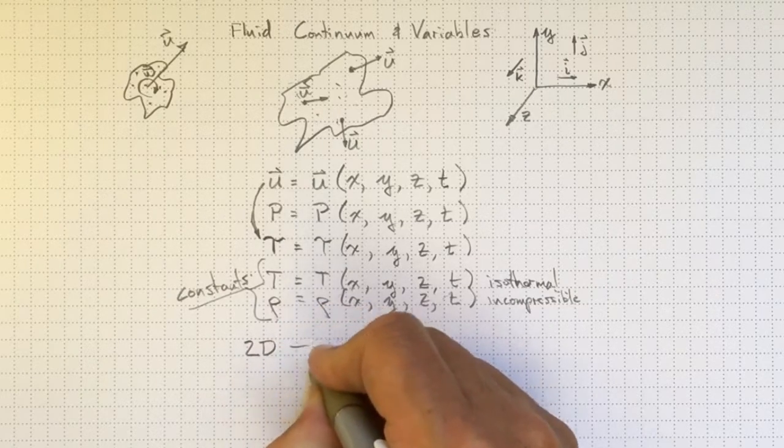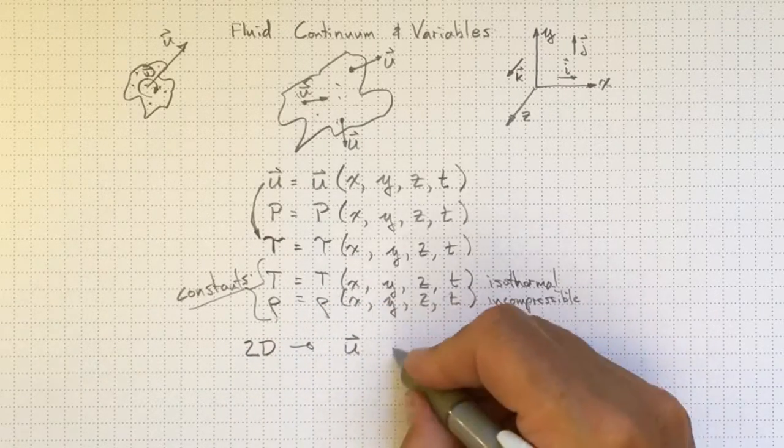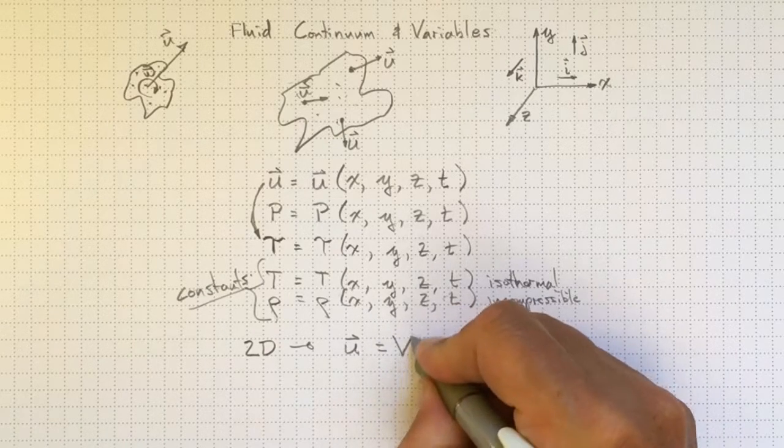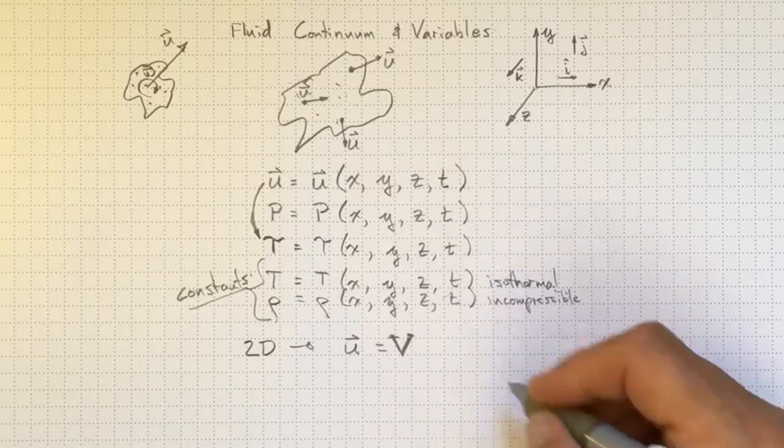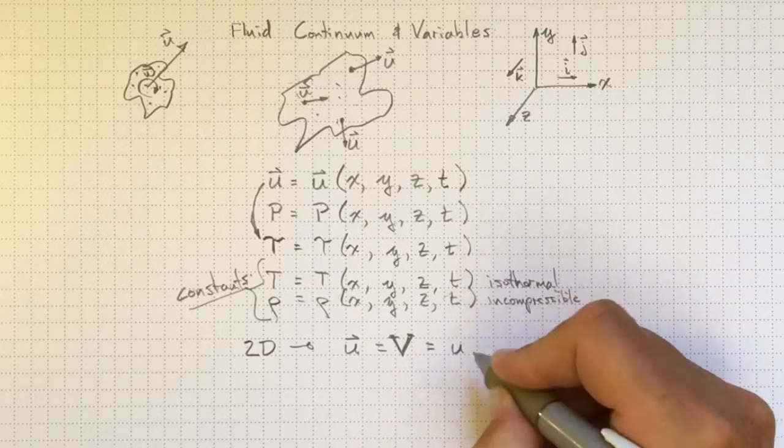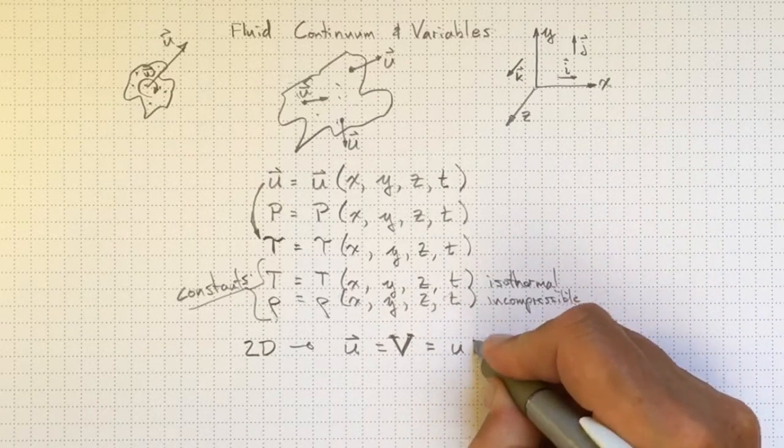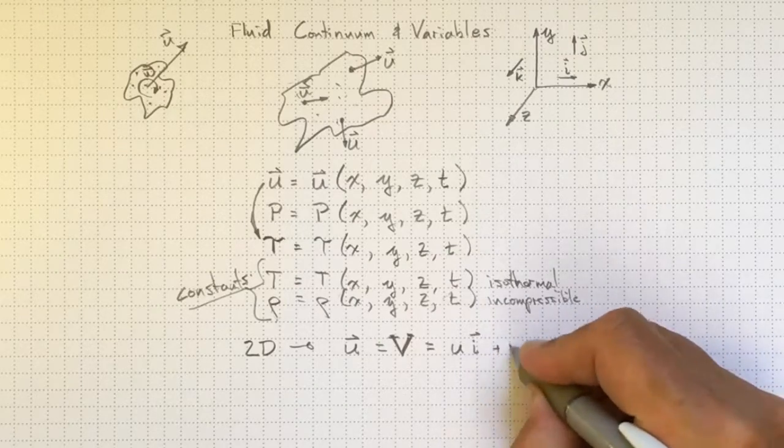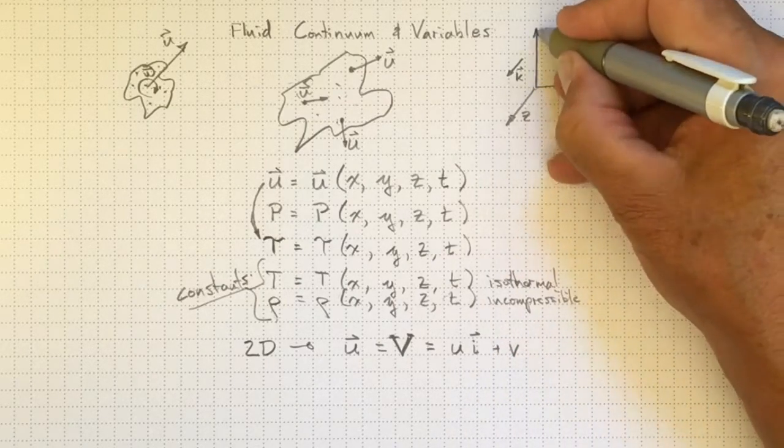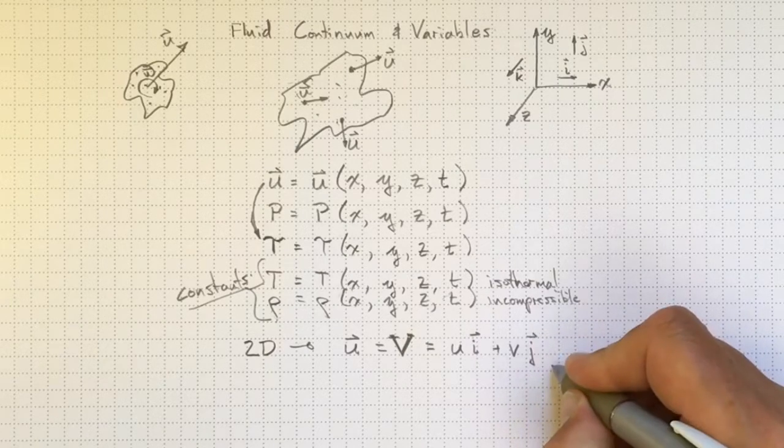In two dimensions, our velocity, u, also sometimes written as capital V in bold, to indicate that it's a vector, will be equal to the components, u in the x direction, times the i vector, which is the one that goes in the x direction, plus v, the component going in the y direction, times j, the unit vector pointing in the y direction.